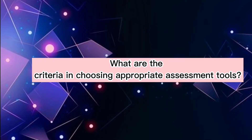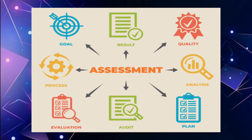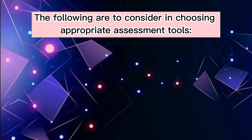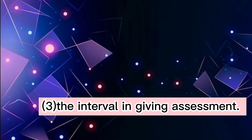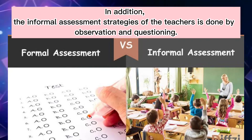The differences in complex cognitive skills of learners require more responsive needs as teachers choose appropriate assessment tools. Assessment tools help learners measure their progress towards specific outcomes and modify their behavior to meet those goals, allowing learners to track their progress over time and enabling teachers and organizations to report on student progress. Criteria to consider include the goals of assessment, methods of assessment (either direct or indirect), and the interval in giving assessments. In addition, informal assessment strategies such as observation and questioning are also used by teachers.